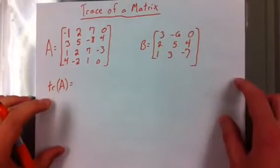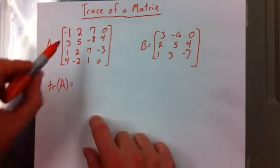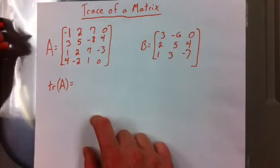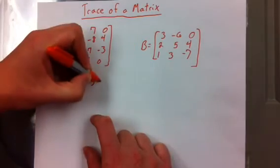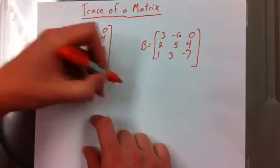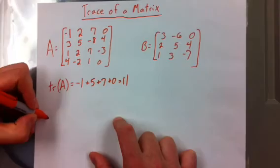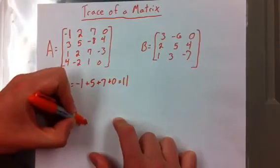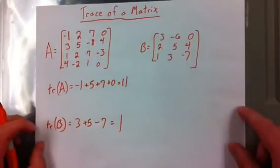And now after transpose, we move to the trace of a matrix. And the trace of a matrix is also very simple. So the trace is just defined as you just add up the components along the diagonal. It's very straightforward. So we have the trace of A, it's just going to be negative 1 plus 5 plus 7 plus 0 is equal to 11. It's probably one of the easiest things we could do here. And the trace of B then is equal to 3 plus 5 minus 7, which that's equal to 1. And that's how you do the trace of a matrix.